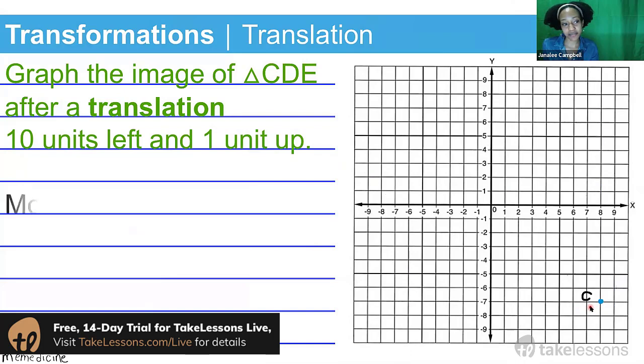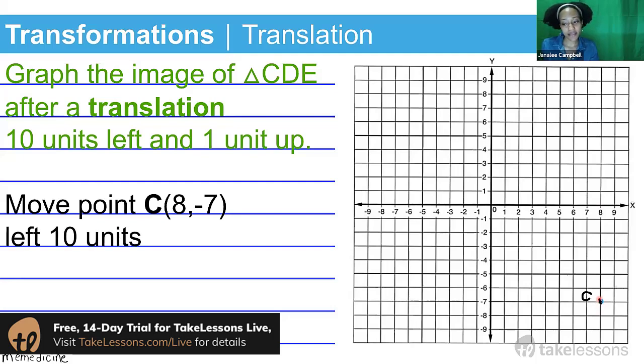And we're going to move point C, which is currently located at an x-coordinate of 8 and a y-coordinate of negative 7. We're going to move it left 10 units, so 1, 2, 3, 4, 5, 6, 7, 8, 9, 10...